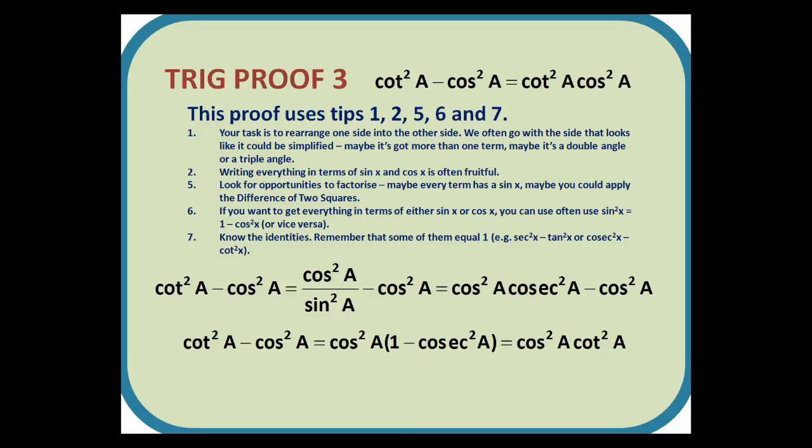Trig proof 3. cot²a - cos²a = cot²a cos²a. This will be attempted in two ways. Firstly, we replace the cot²a with cos²a/sin²a, and then we write the sin²a as cosec²a. So we have cos²a cosec²a - cos²a. We can then factorize out the cos²a. So we have cos²a(1 - cosec²a), and of course 1 - cosec²a is cot²a, and we've finished.